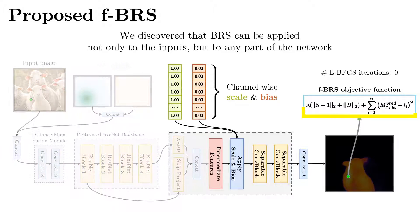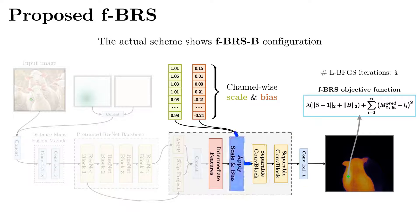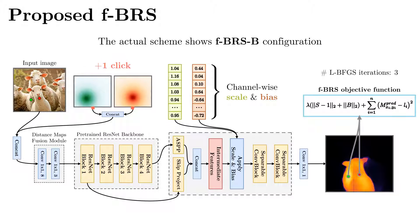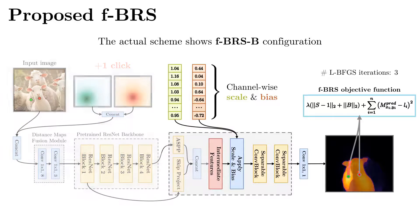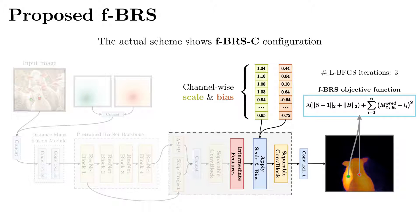We propose Feature Backpropagating Refinement Scheme, or FBRS, where any intermediate layer output of the network can stand as a target optimization variable. In particular, our method modifies scale and bias of intermediate layers. We present several configurations of our method. The main difference is the position of intermediate layers that are to be optimized.